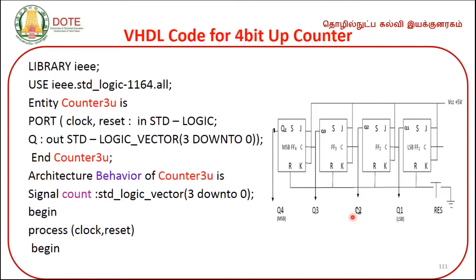Inside the architecture, we declare the signal: signal count: std_logic_vector(3 downto 0); This signal named 'count' is used to hold the counter value. Then we write 'begin' to start the main body.